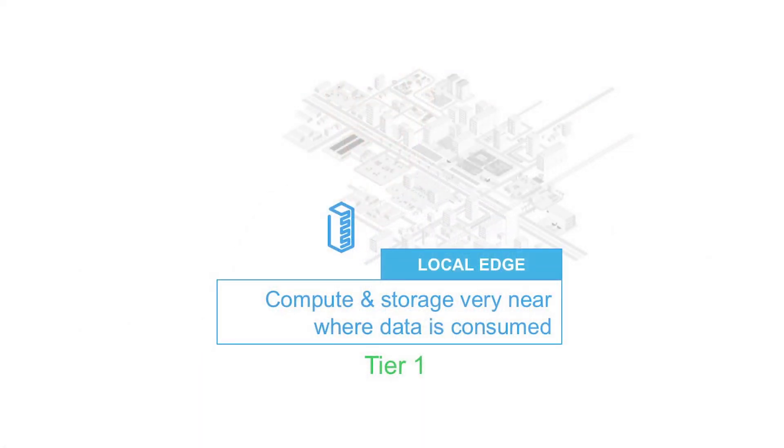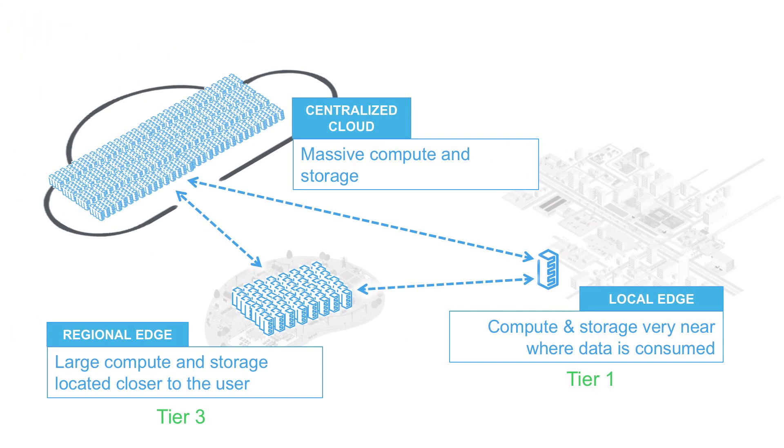We've talked about why the focus of IT is moving back towards this distributed model and how that's problematic for many customers, because these tier one local edge sites have significantly lower levels of availability than tier three data centers. As a partner, you play a critical role in deploying the strategy for your customers, because many of them are both decreasing the size of their IT staff and have a lack of expertise in the applications being deployed.